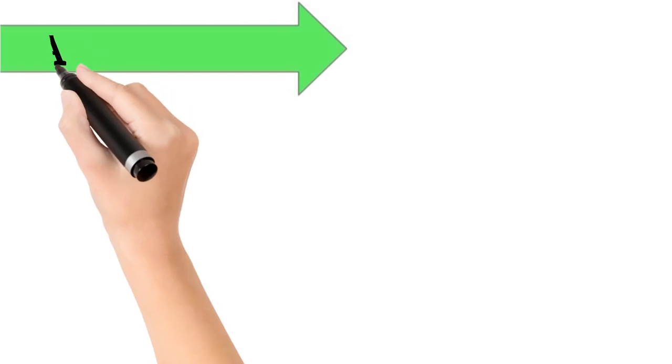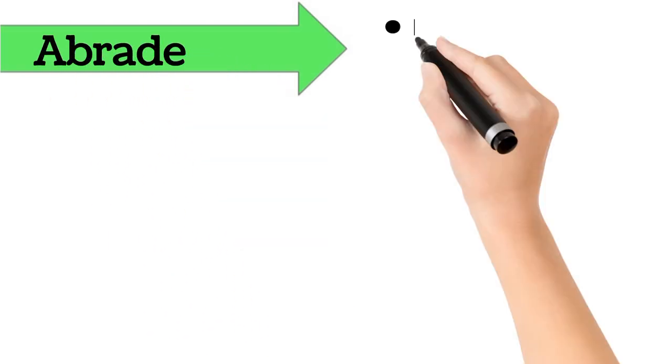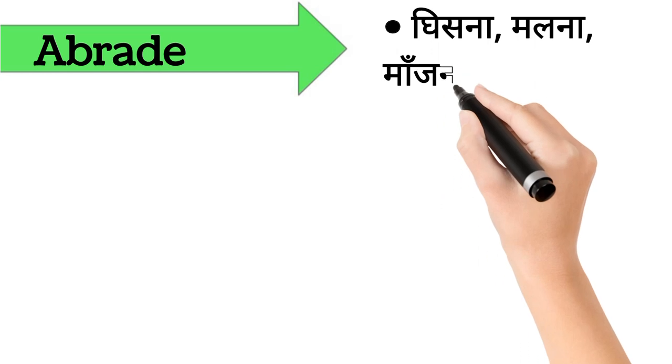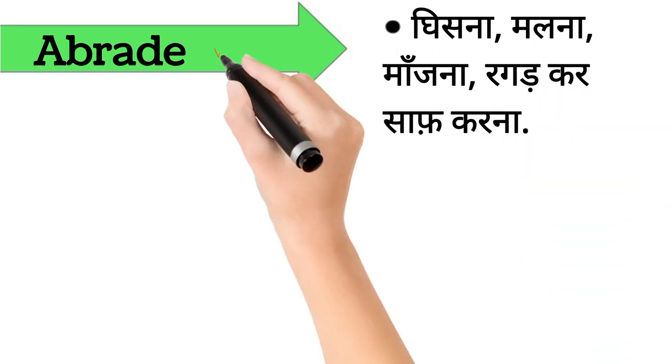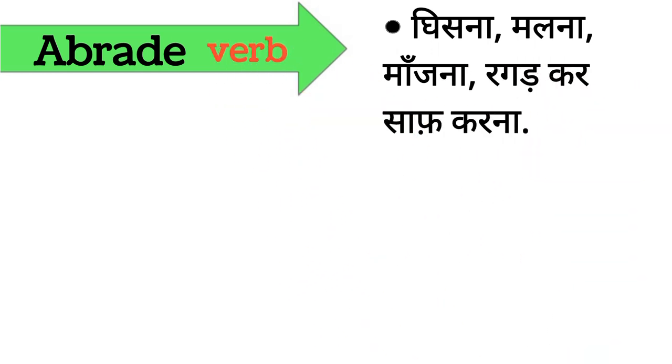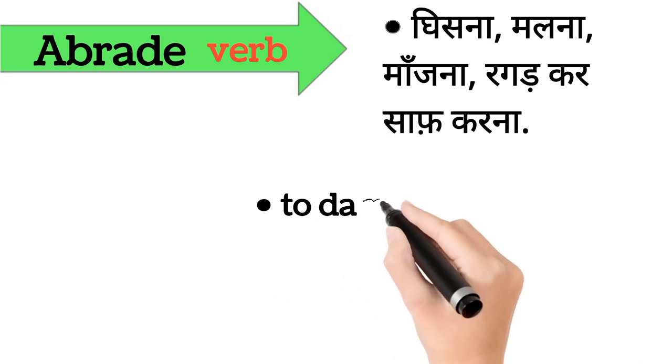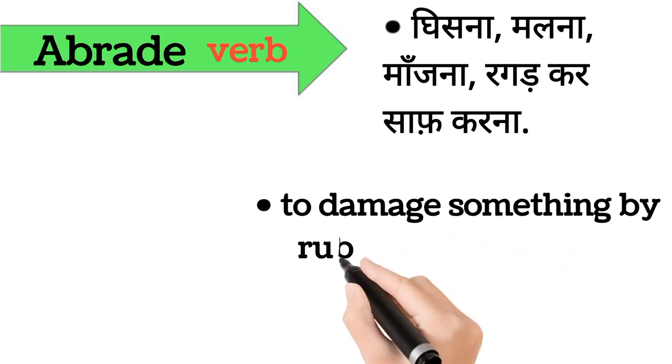Abrade. Abrade ka arth hai, ghisna, malna, manjna, ragad kar saaf karna. Abrade word verb form mein aata hai. It's also called, to damage something by rubbing, grinding, or scraping.